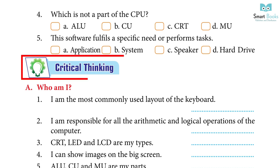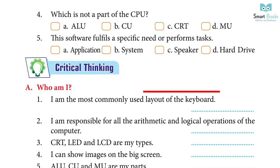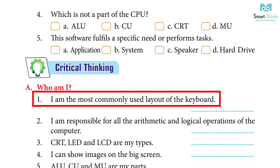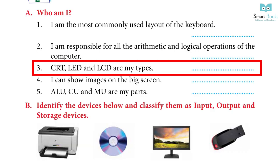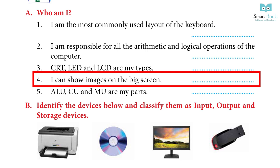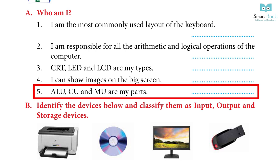Critical Thinking. A. Who am I? 1. I am the most commonly used layout of the keyboard — Answer: QWERTY. 2. I am responsible for all arithmetic and logical operations of the computer — Answer: ALU. 3. CRT, LED and LCD are my types — Answer: Monitor. 4. I can show images on the big screen — Answer: Projector. 5. ALU, CU and MU are my parts — Answer: CPU.